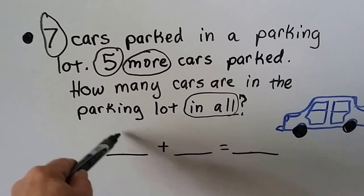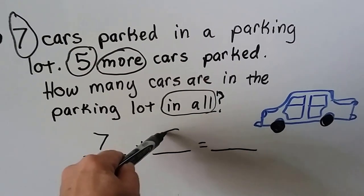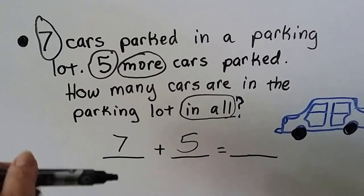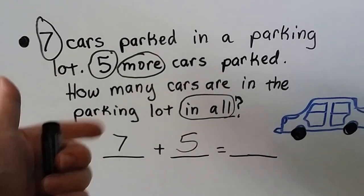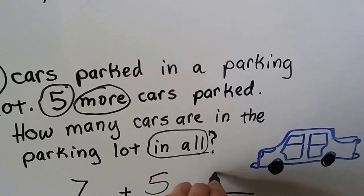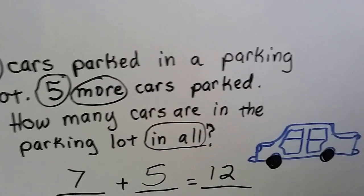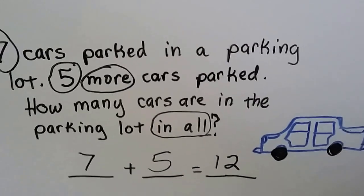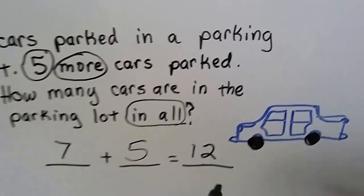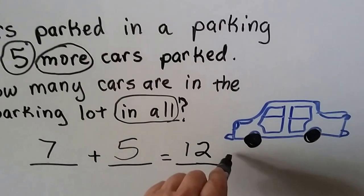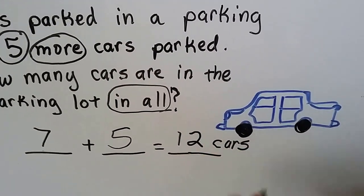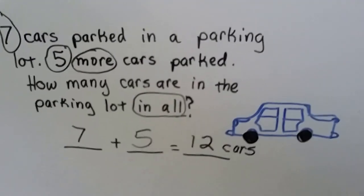We're going to add seven plus five — seven, eight, nine, ten, eleven, twelve. Twelve what? How many cars are in the parking lot in all? So we have twelve cars. We make sure we label it.